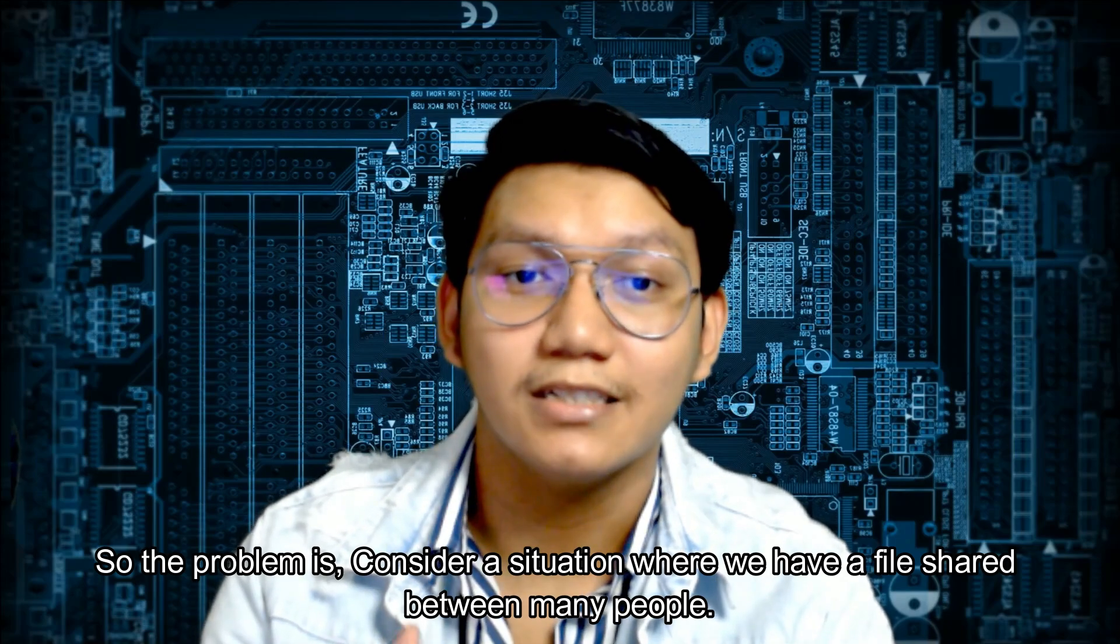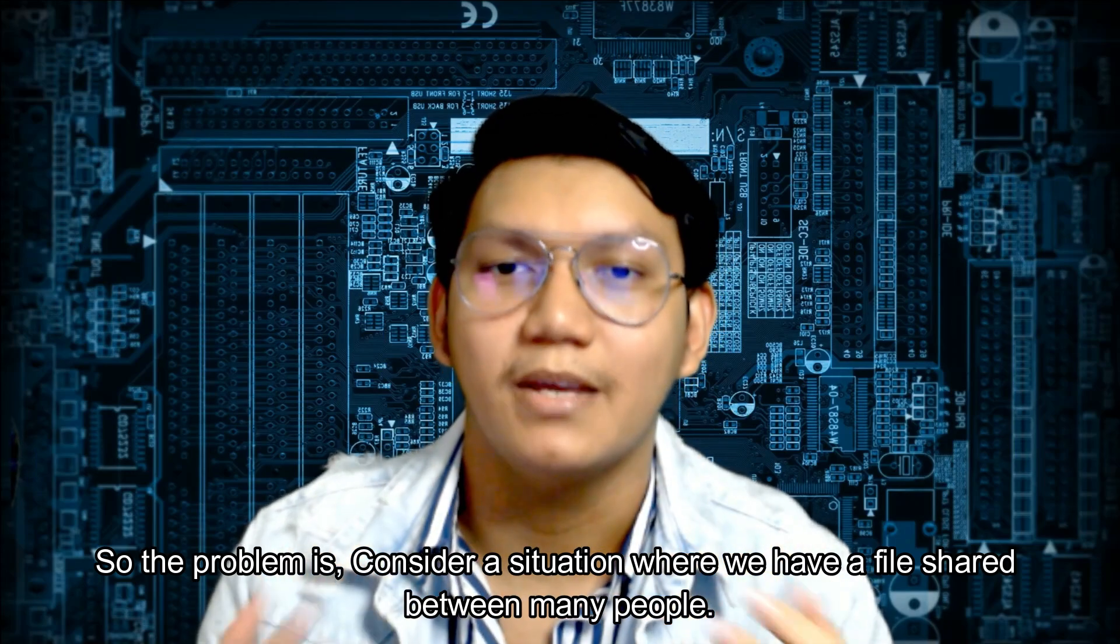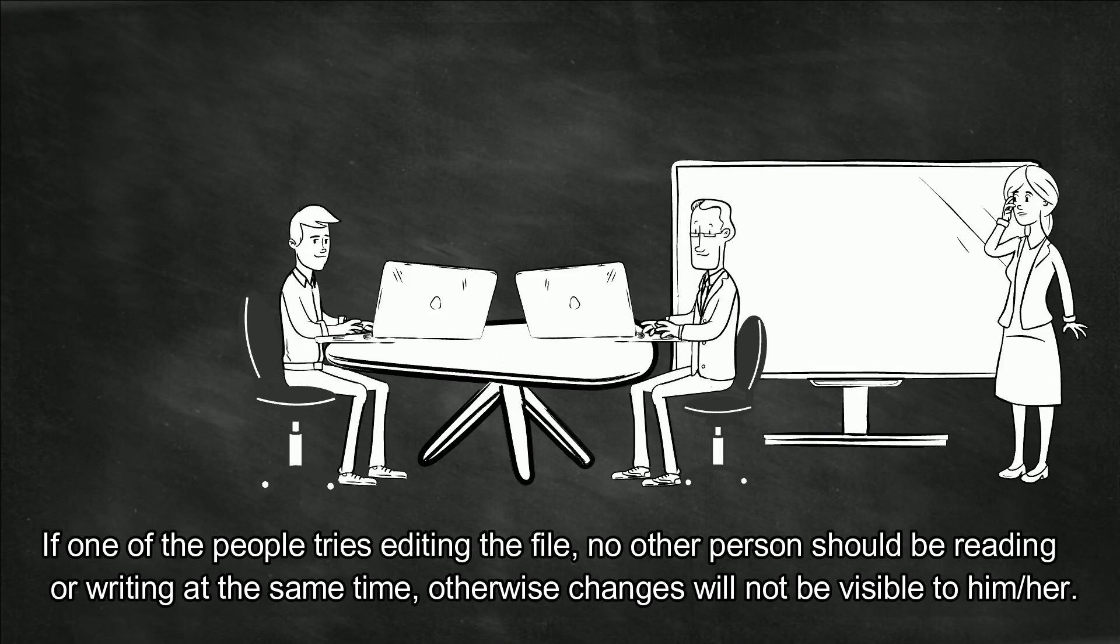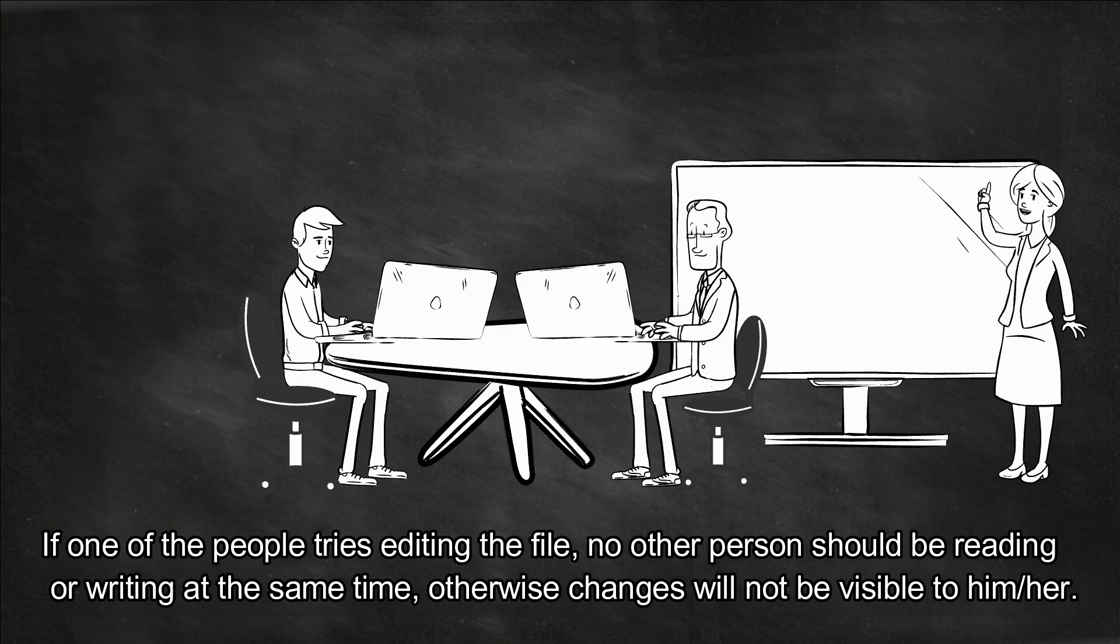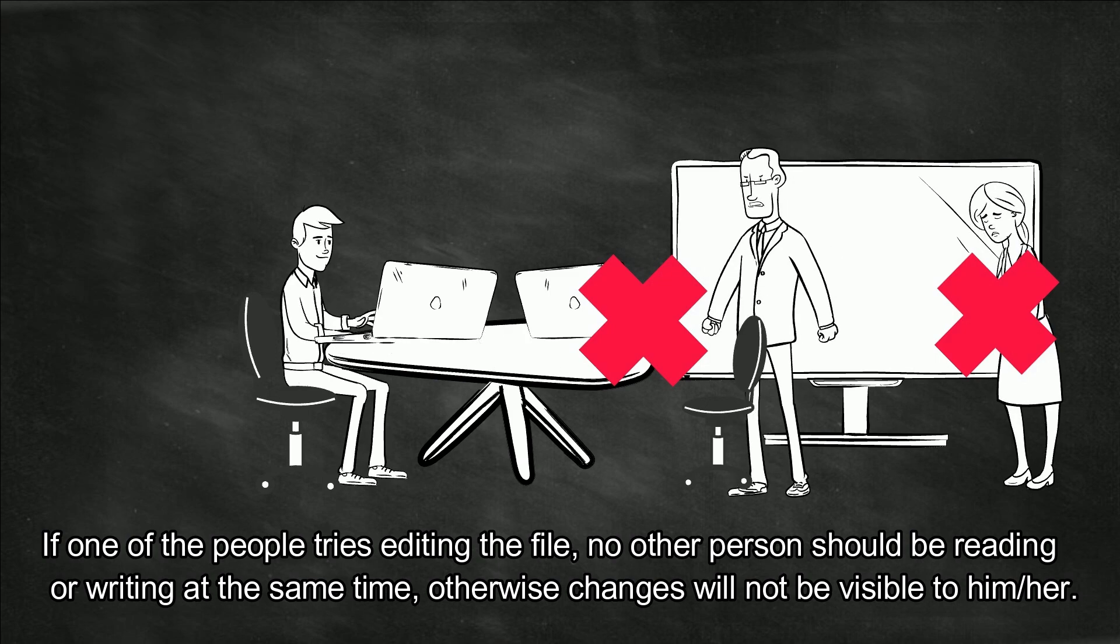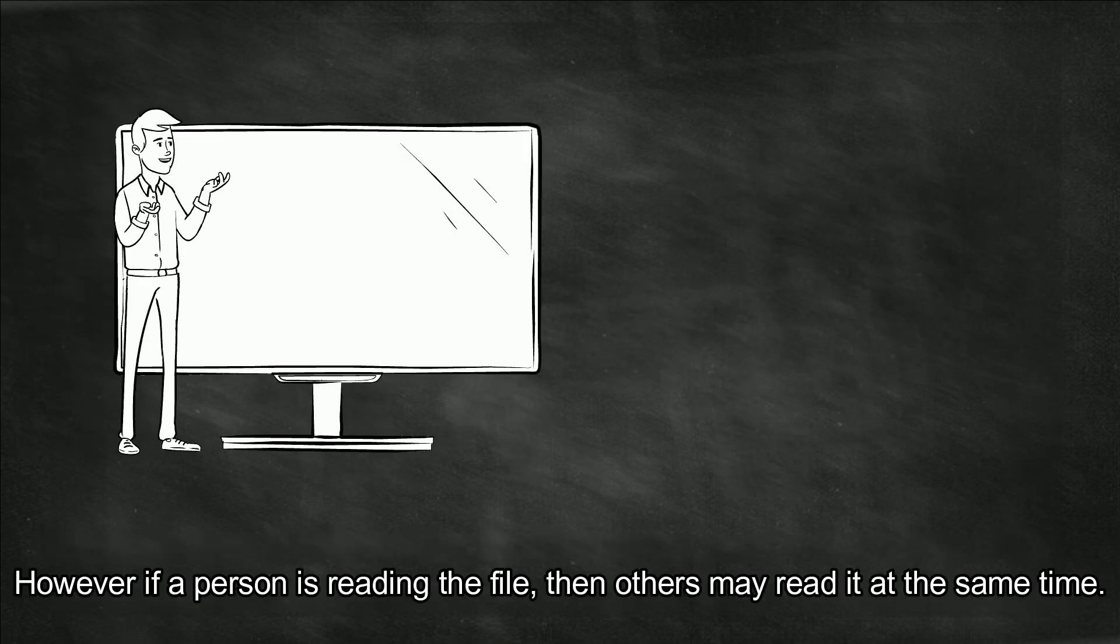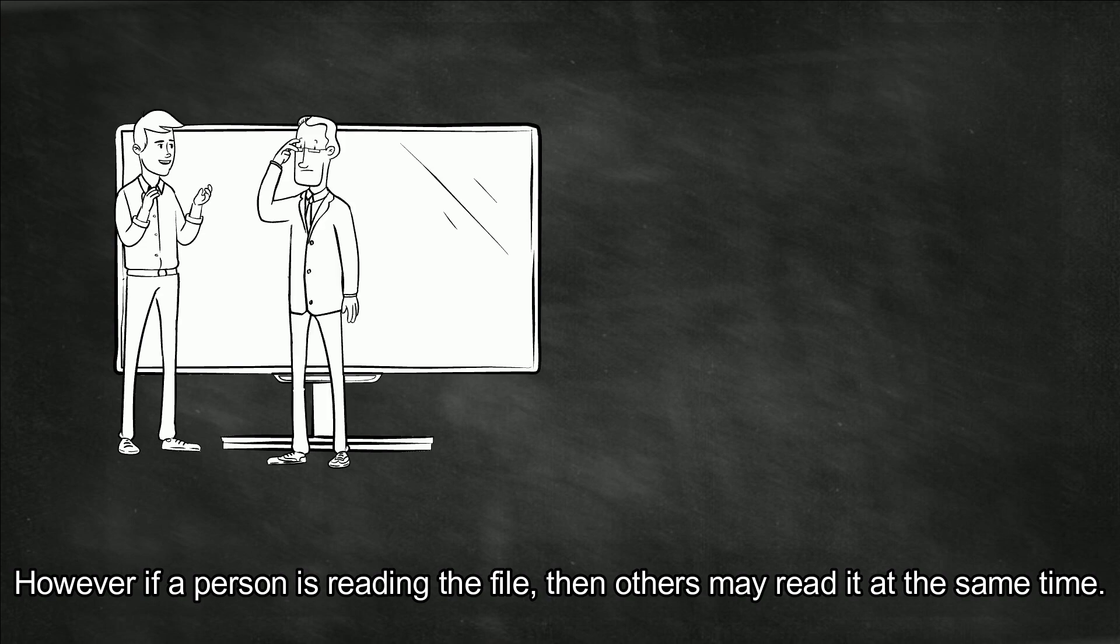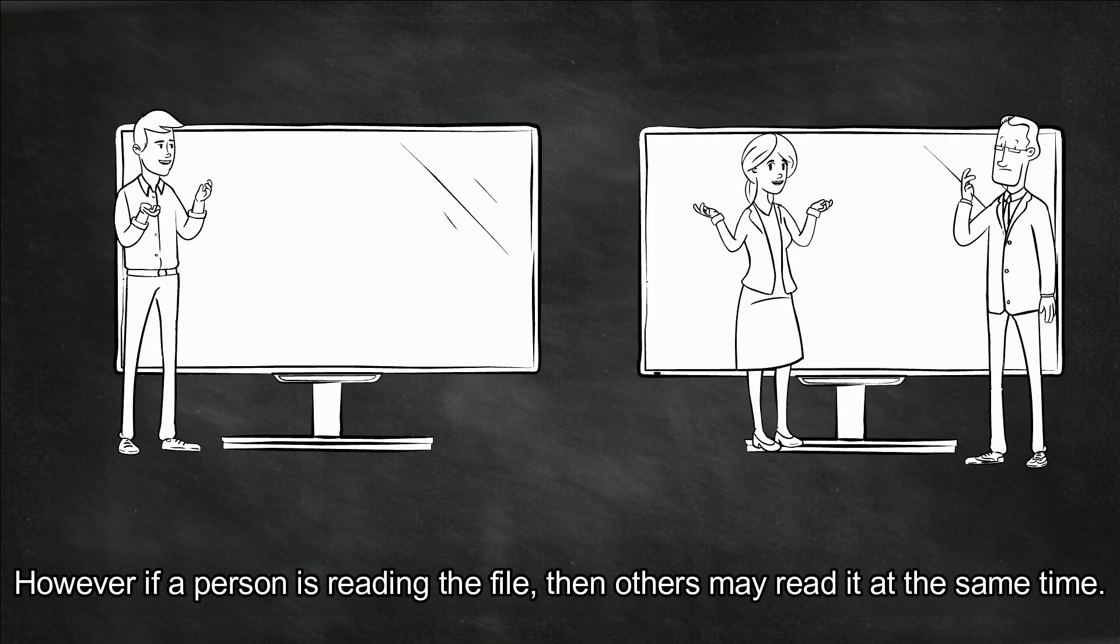The problem is considered a situation where we have a file shared between many people. If one of the people tries editing the file, no other person should be reading or writing at the same time. Otherwise, changes will not be visible to him or her. However, if the person is reading the file, then others may read it at the same time.